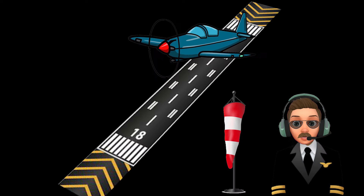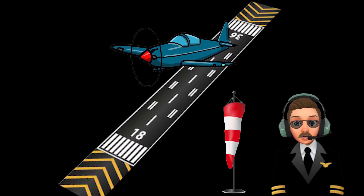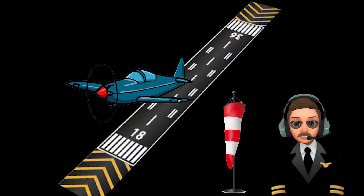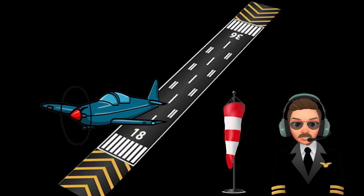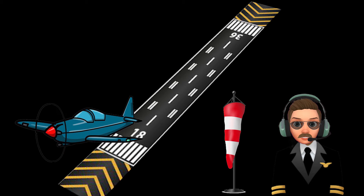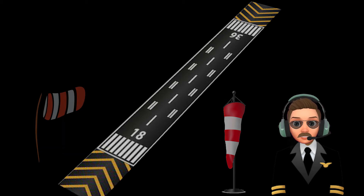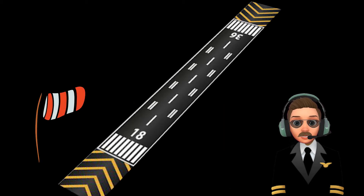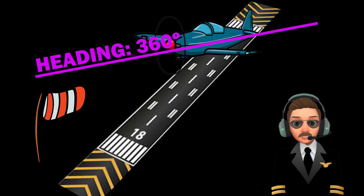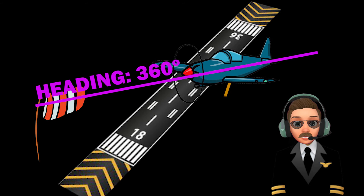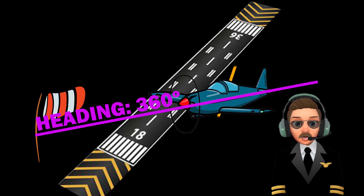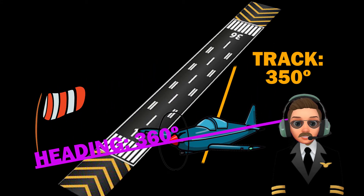Heading is referred from the longitudinal axis of a plane and the track is referred to the path over the ground which the plane is overflying. When the wind is calm, the plane will have the same heading and the same track, but in the situation where we have lateral wind, the heading and the track are different.